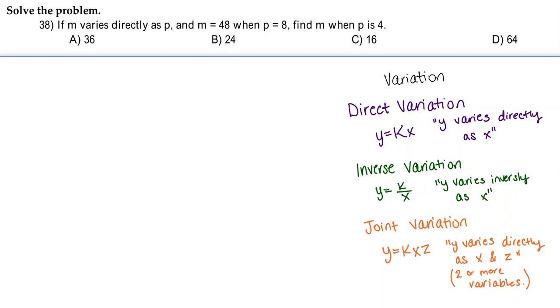So first and foremost, when we look at this problem, it says that m varies directly as p, and so since it varies only to one variable, we're looking at direct variation.